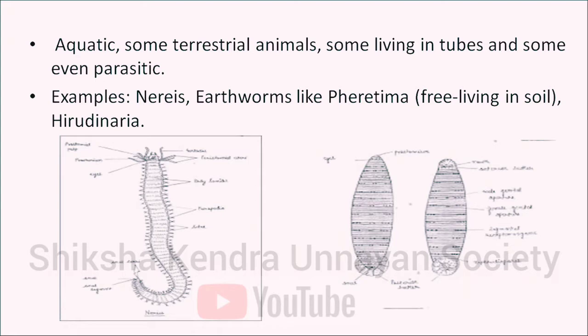The next phylum is phylum Annelida, which includes earthworms. They are elongated, segmented, coelomate — meaning they have a true body cavity — worm-like animals. The body is provided with setae or parapodia for locomotion. They have a well-developed digestive system with the alimentary canal opening at both ends. The excretory system consists of nephridia. Sexes are united as in the earthworm, or separate as in Nereis. Regeneration is quite frequent. They are aquatic, some are terrestrial, some live in tubes and some are even parasitic. Examples: Nereis, earthworms like Pheretima, and Hirudinaria.